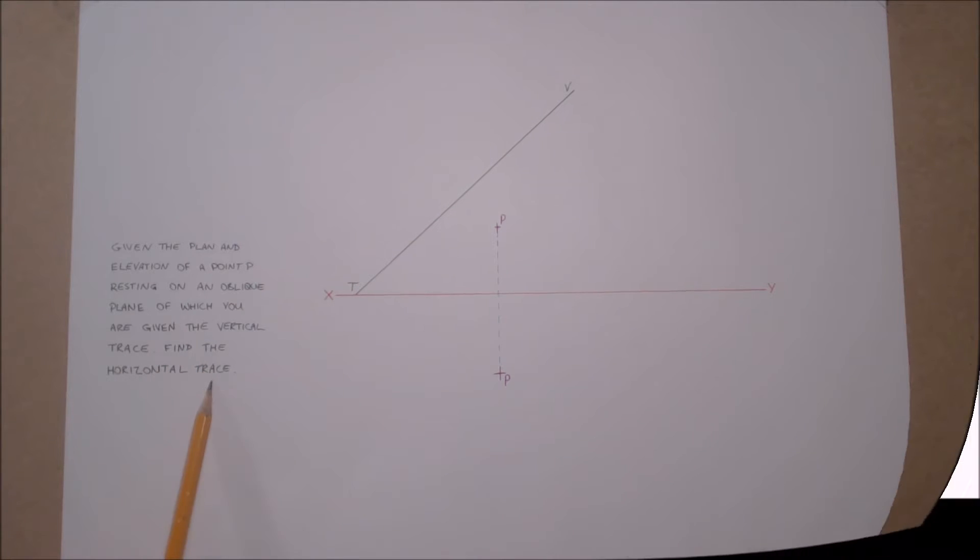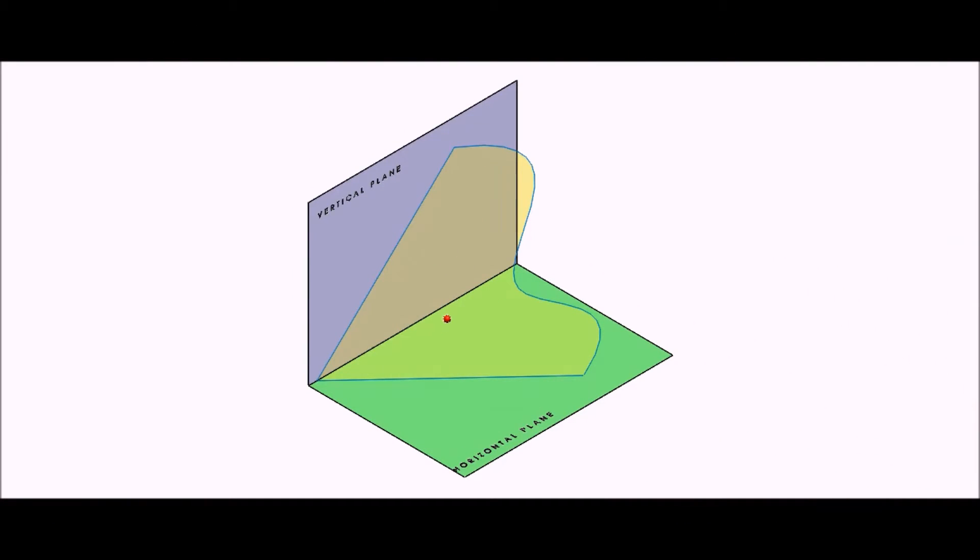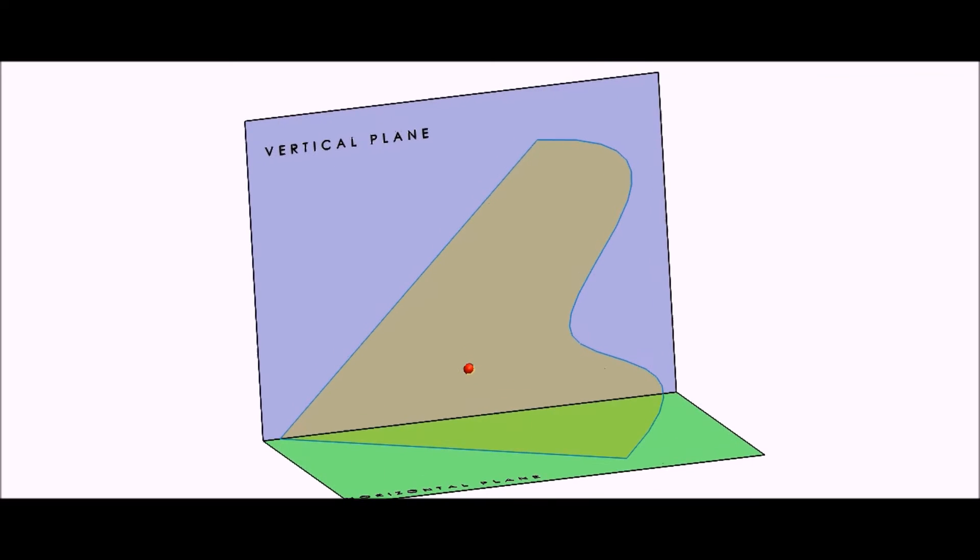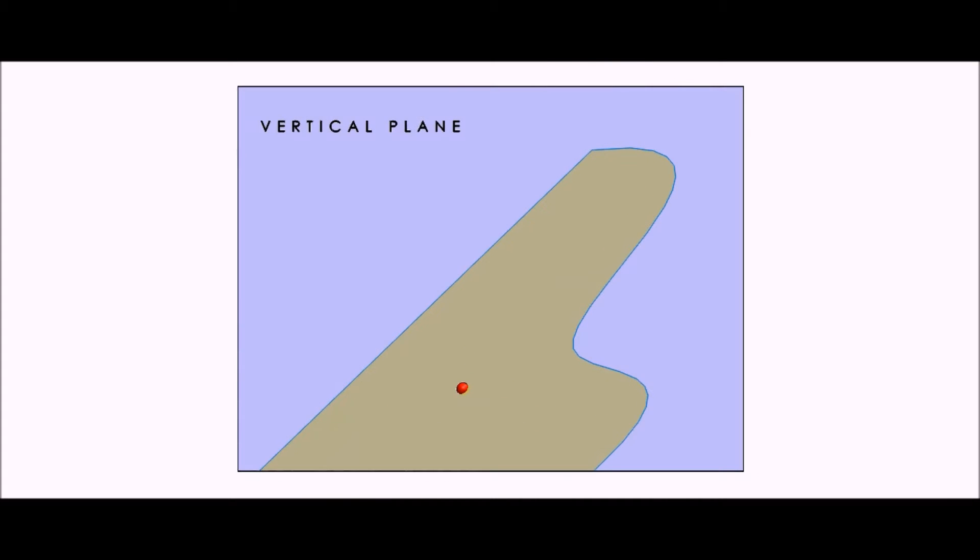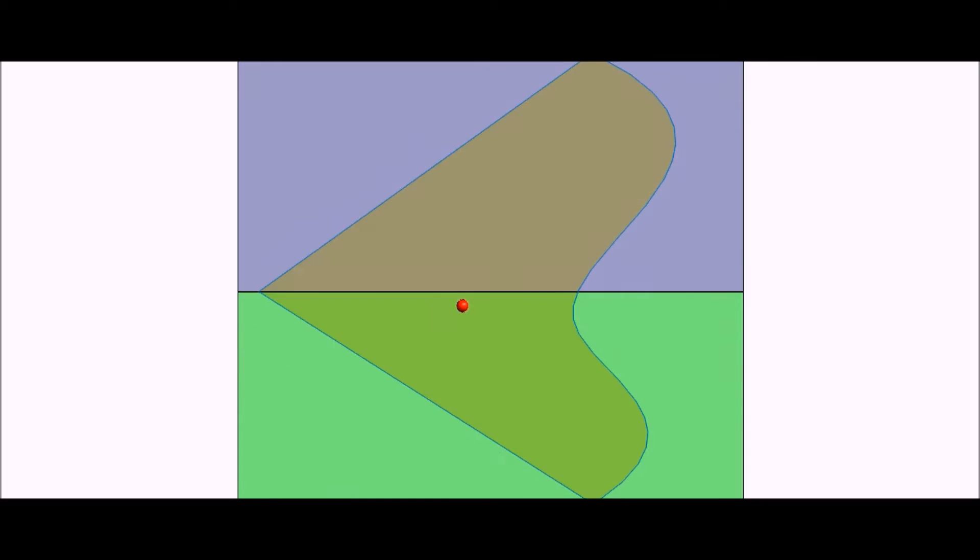Here we see a SOLIDWORKS model of a point on an oblique plane. To find the horizontal trace we must use the principle of a cutting plane.